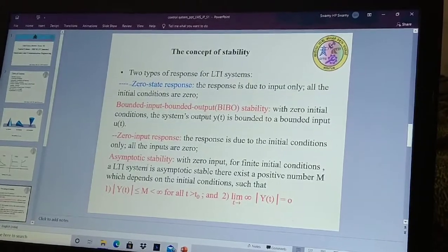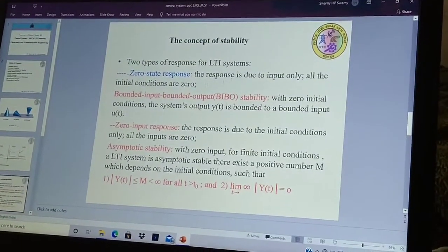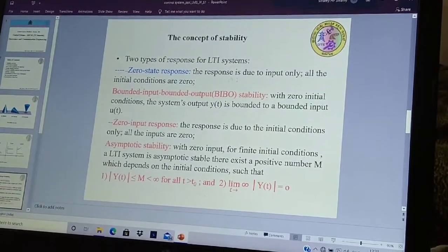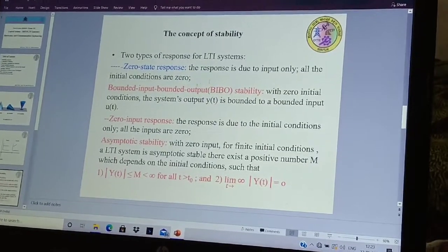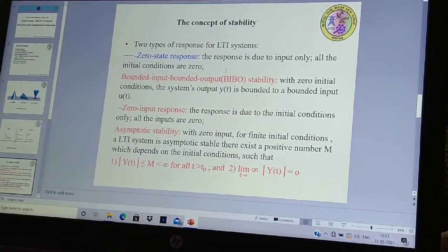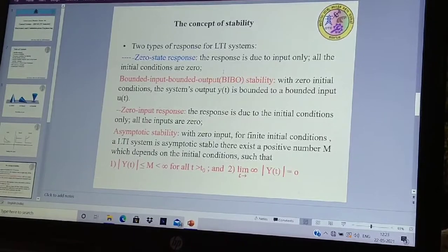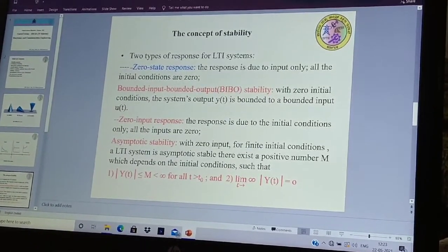There are two types of response for LTI systems. Zero state response. The response is due to input only. All the initial conditions are zero. Response means output of a system will be getting for input only. But initial conditions of that system will become zero. That response is called as zero state response.